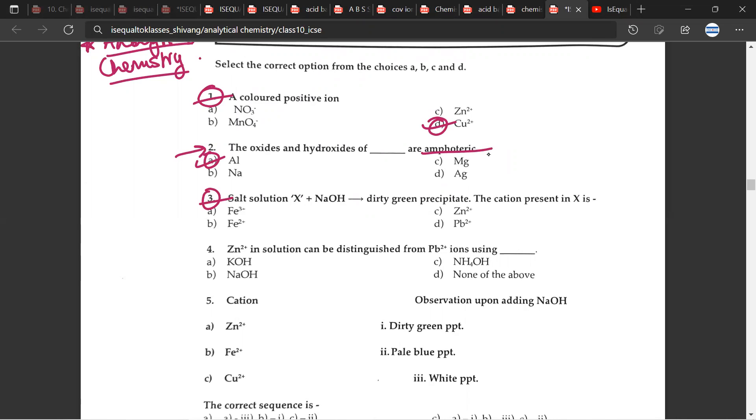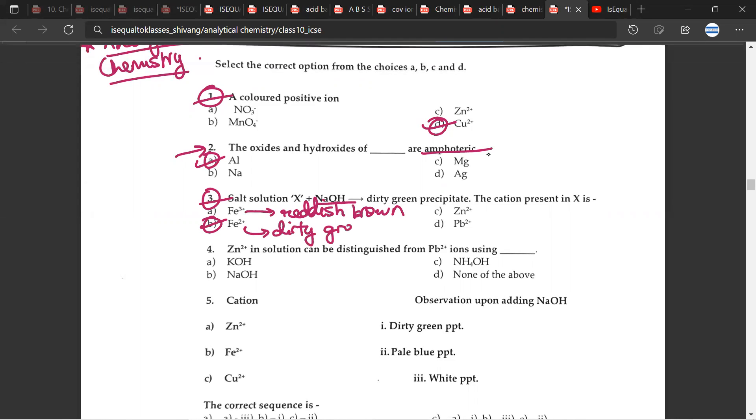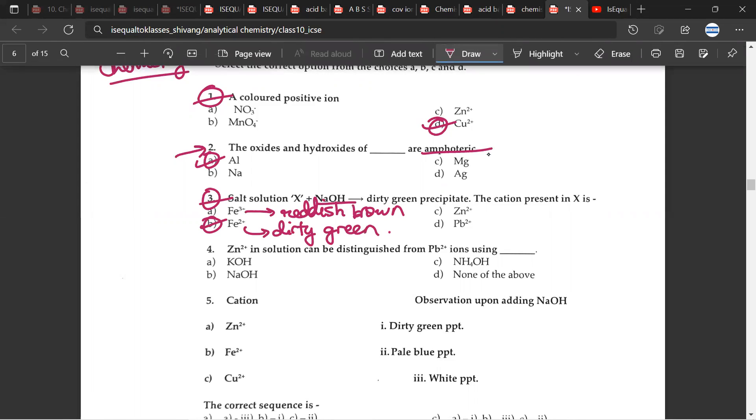Third question, the salt solution X plus NaOH, in the sense sodium hydroxide, gives a dirty green precipitate. The cation present in X would be B, Fe2+. Fe3+ gives reddish brown, but Fe2+ in this case gives dirty green precipitate.